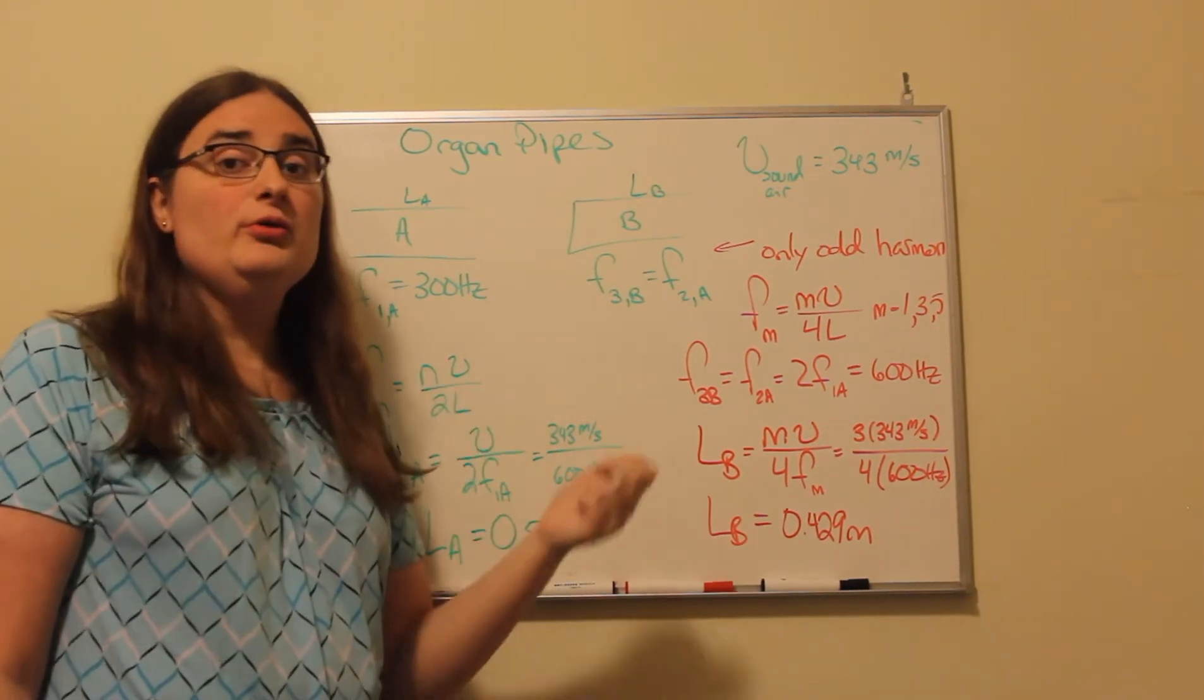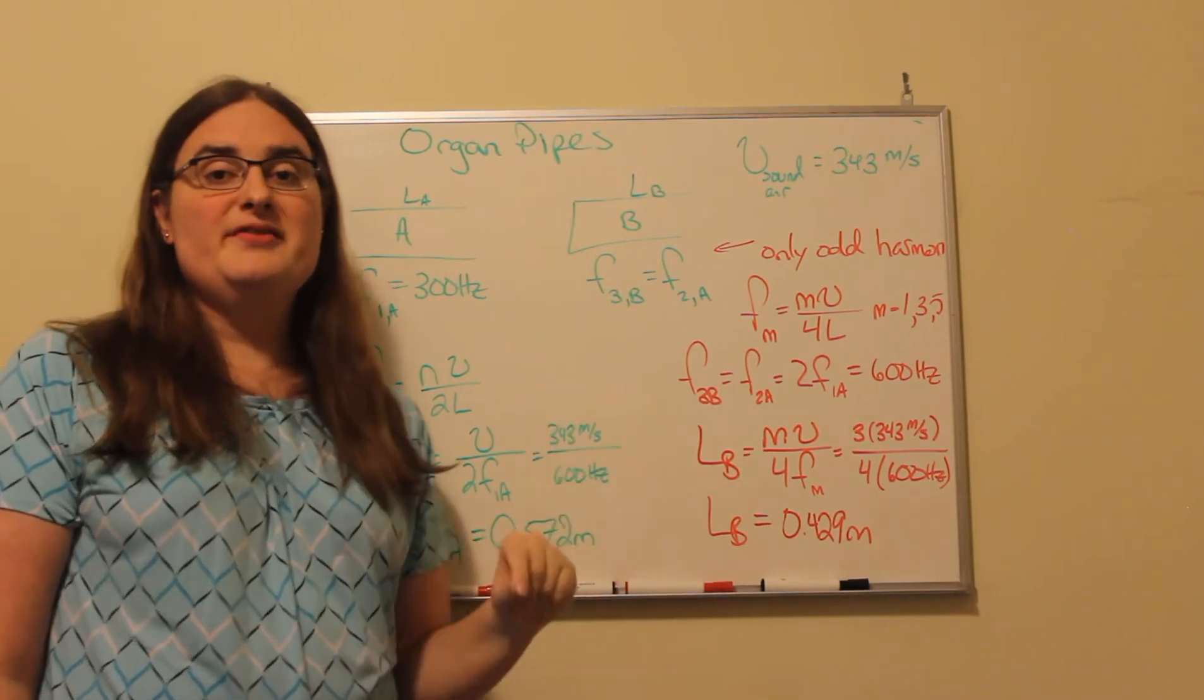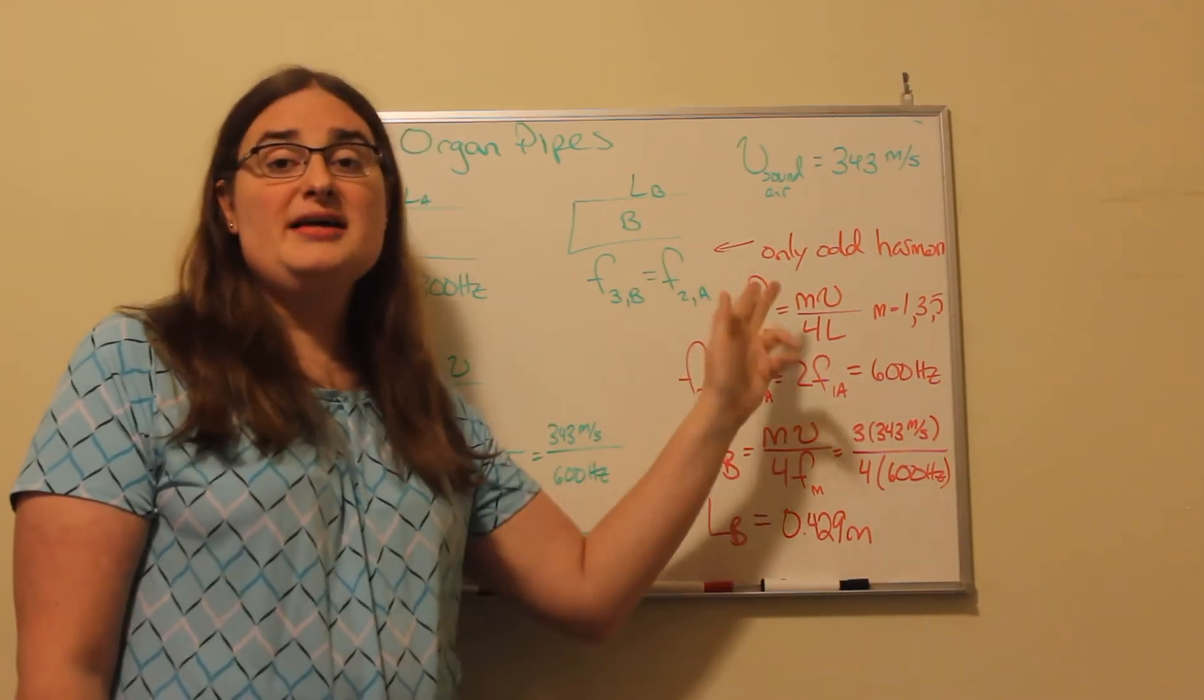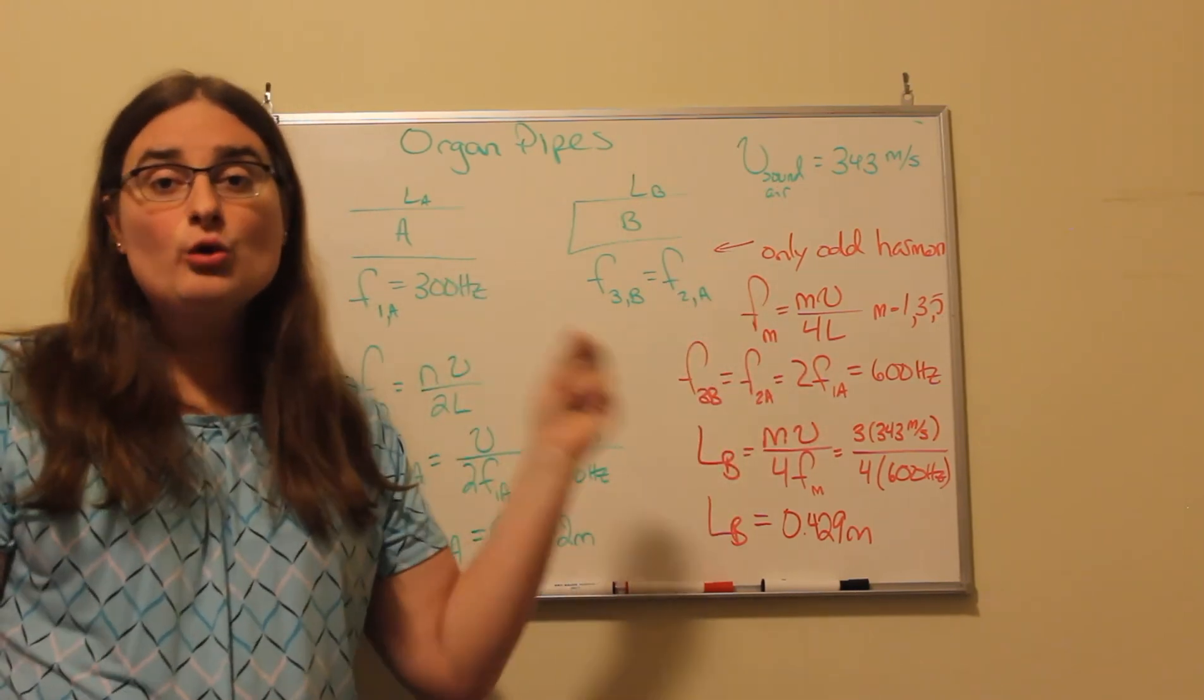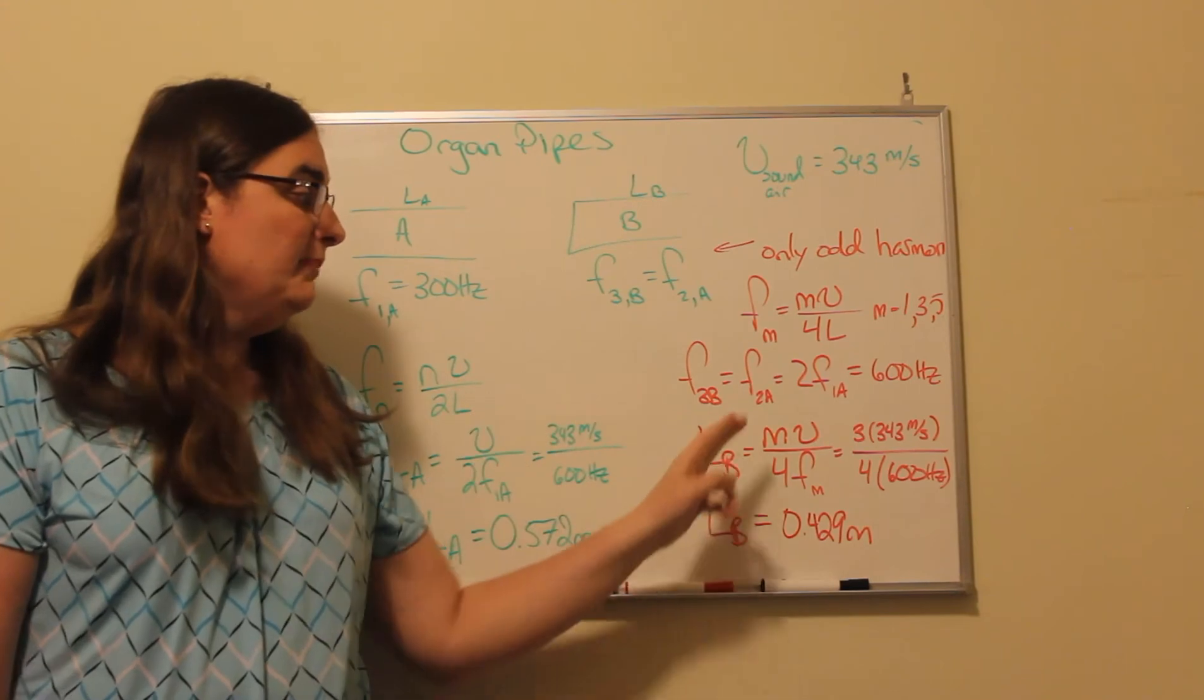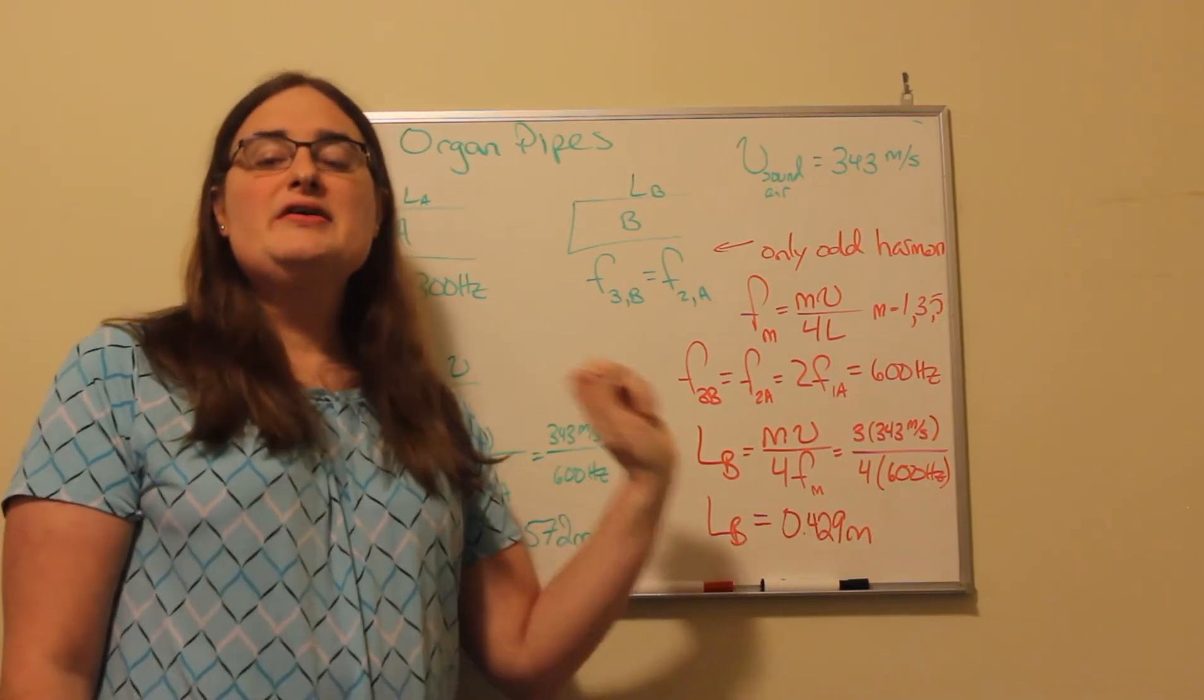So we're told our third harmonic, which would be an integer m equals three times our fundamental frequency, is equal to the second harmonic in the previous pipe. And the frequencies that we have are equal to our harmonic number m, which is an odd integer, times the speed of sound, divided by four times the length of the pipe, because of that quarter wave nature that I mentioned. So three times my fundamental frequency for the second pipe is two times my fundamental frequency for the first pipe. So we'd be dealing with a frequency of 600 Hertz for m equals three.